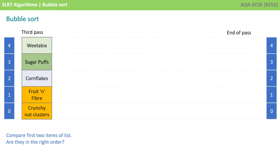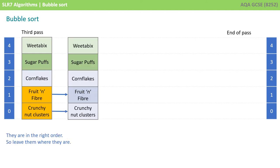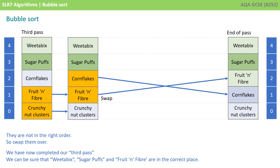Compare the first two items of the list: fruit and fibre and crunch nut clusters. Are they in the right order? They are in the right order, so we leave them where they are. We now compare the next two items, cornflakes and fruit and fibre. Are they in the right order? They are not in the right order, so we swap them over. We've now completed our third pass. We can be sure that Weetabix, sugar puffs and fruit and fibre are all in the correct place.